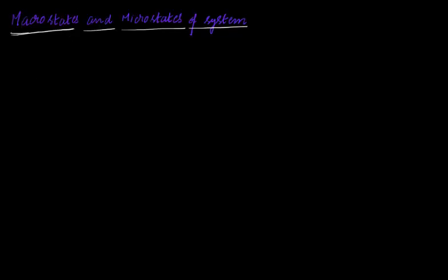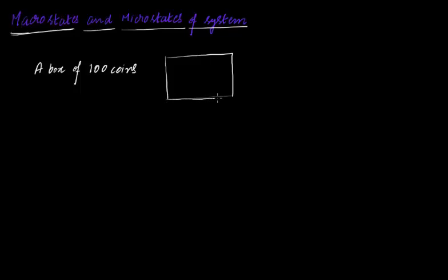Now suppose that you have a box of coins. So let me make a box here — a box of 100 coins. This is the top view of the box opened up, and there are a bunch of coins in the box. These are not particles; these are simply coins which correspond to heads or tails. Let me color the coins to indicate heads or tails — so maybe this is tails, this is tails, this is tails. And suppose that there are 100 of them.